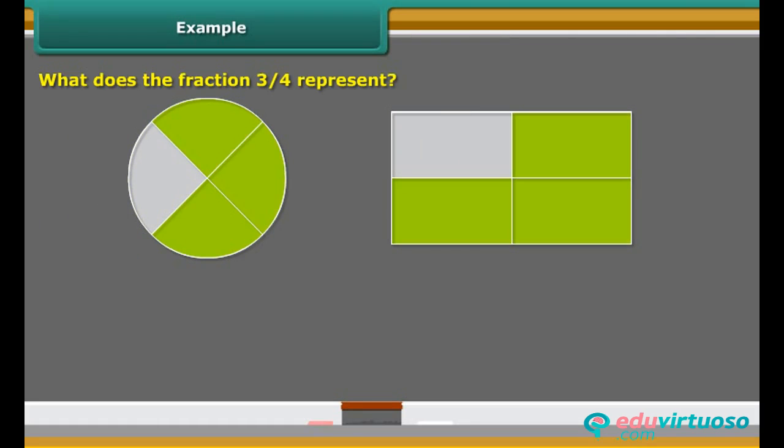What does the fraction 3 upon 4 represent? It represents 3 out of 4 parts. The shaded part of each figure below represents 3 upon 4 of the entire figure.